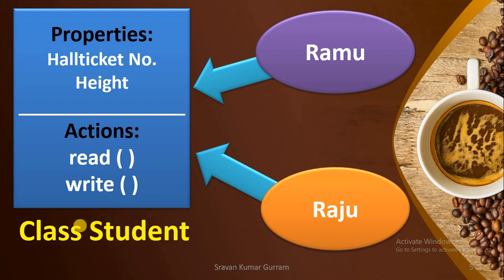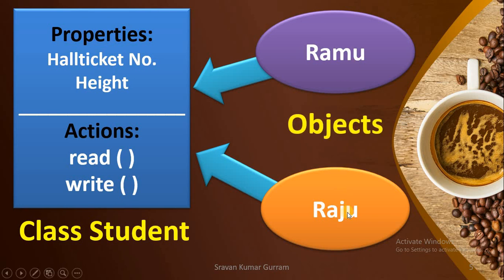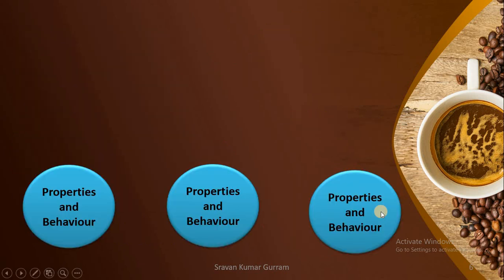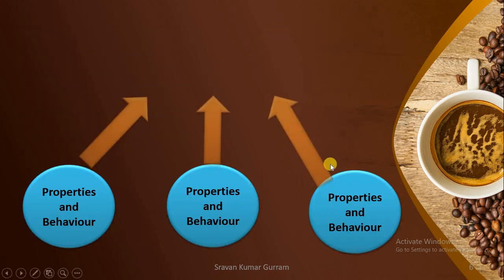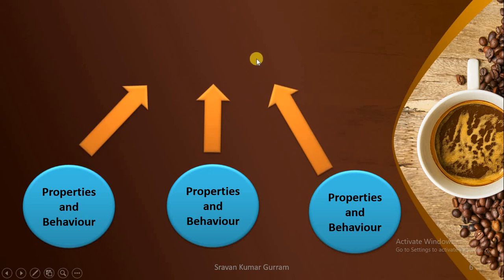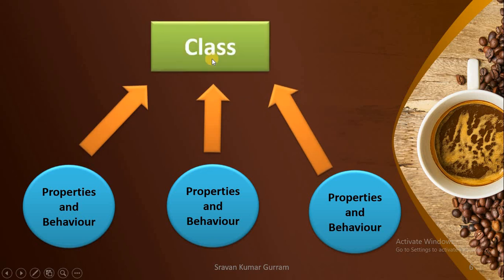Now I am giving this class the name 'Student', because every student has these properties. Raju and Ramo are also students. In this case, Ramo and Raju are called objects, where an object is an instance of a class. We write a single unit containing the common properties and behavior of all the objects — that is called a class.